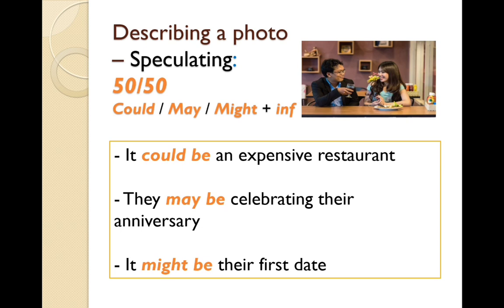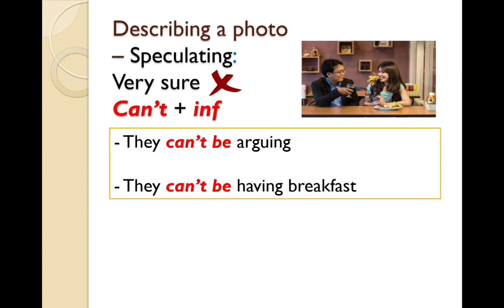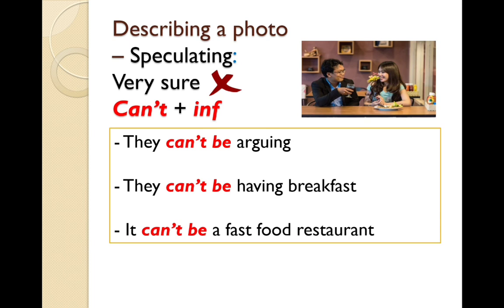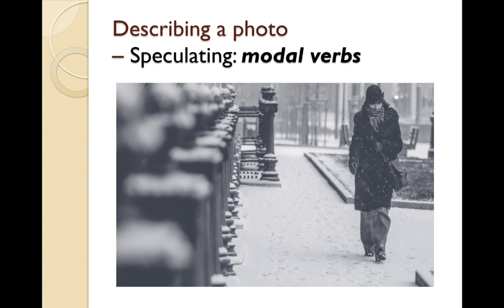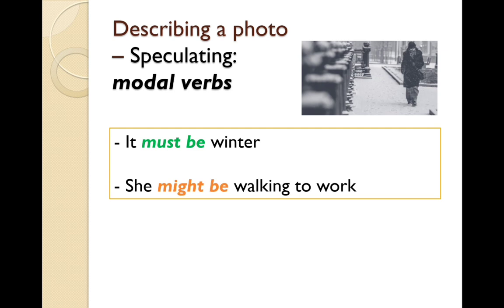If we are very sure that something is not true, we use 'can't' plus the infinitive: they can't be arguing; they can't be having breakfast; it can't be a fast food restaurant; they can't be working. Some more examples: it must be winter; she might be walking to work; it could be London; she can't be warm.